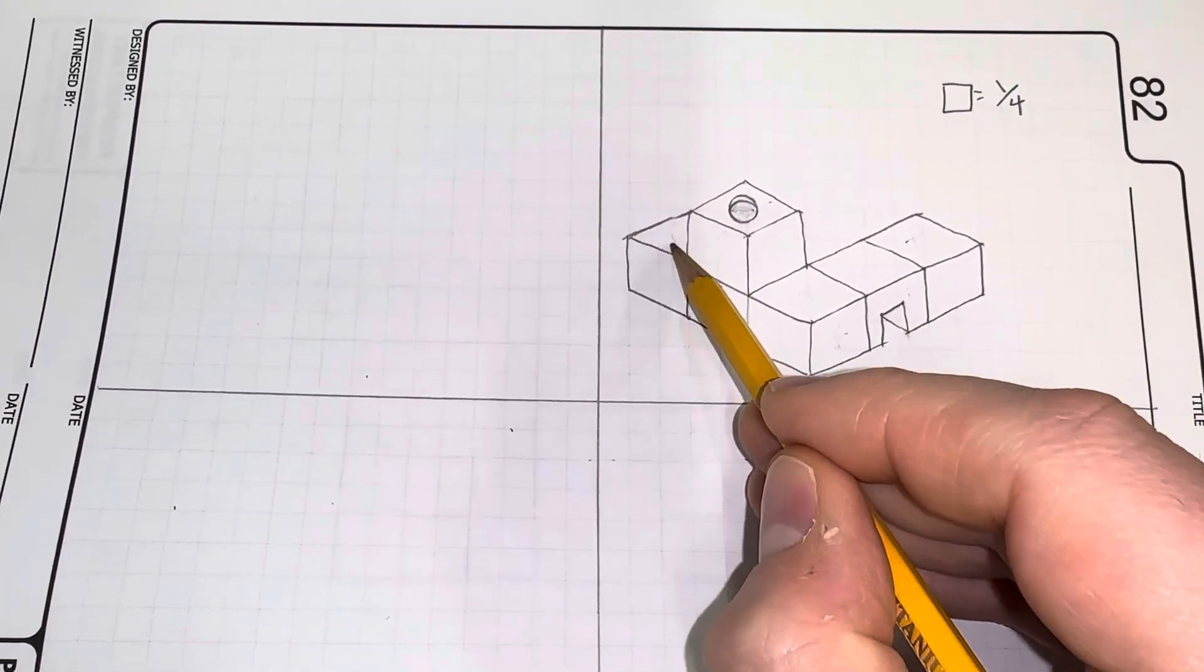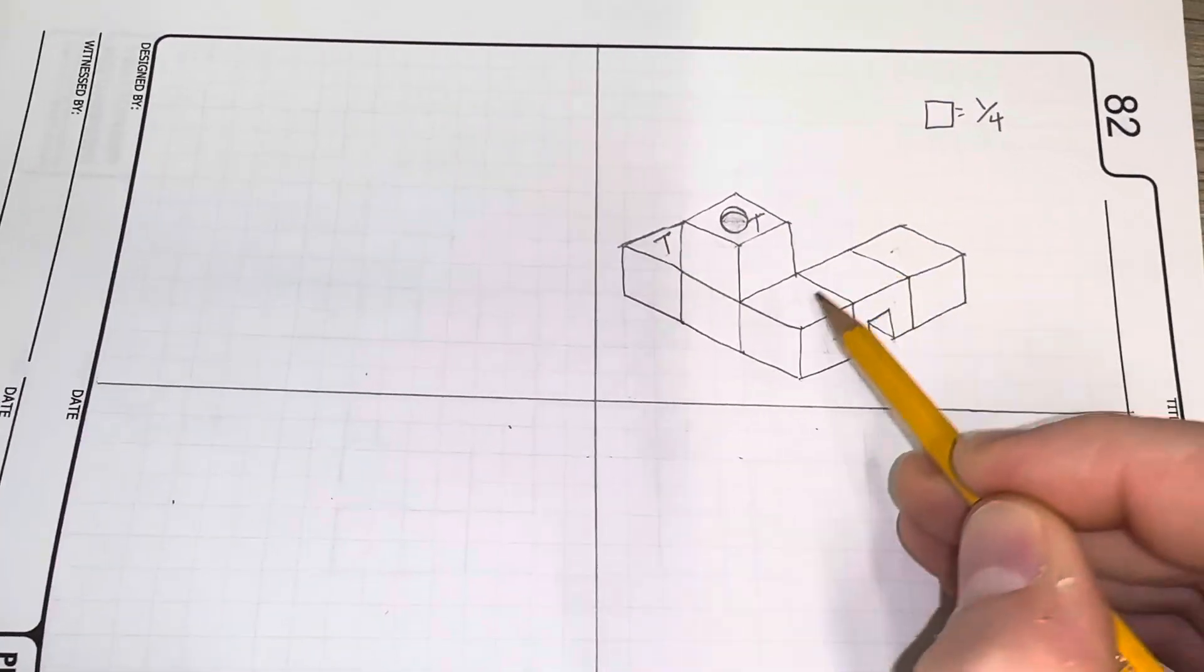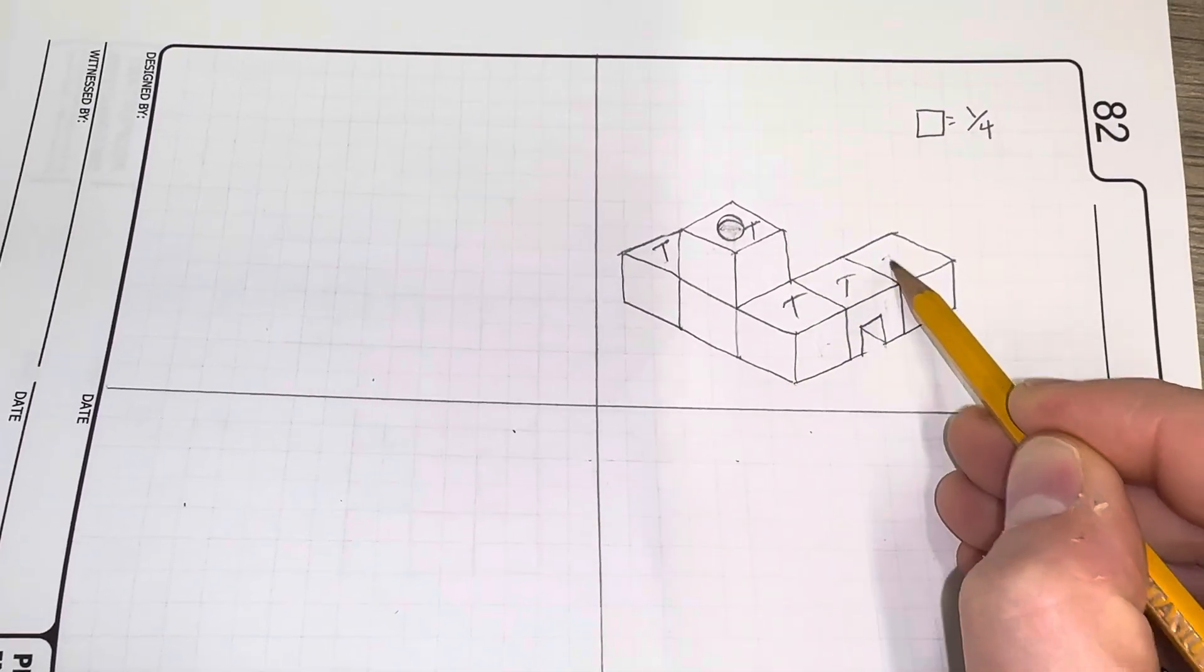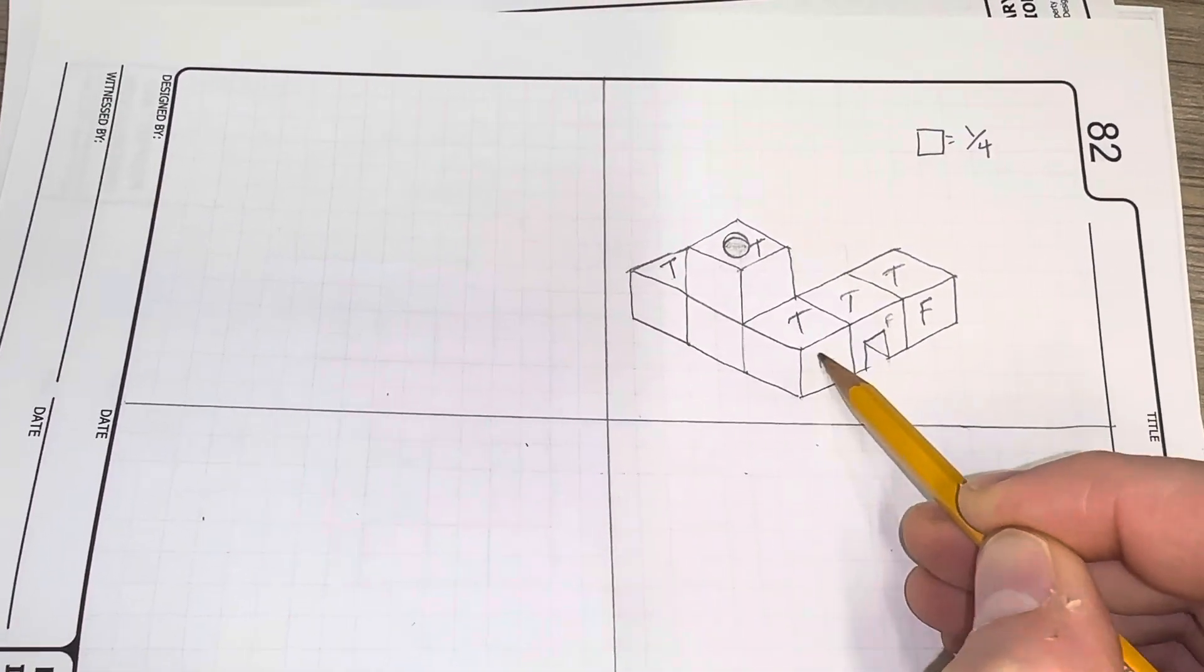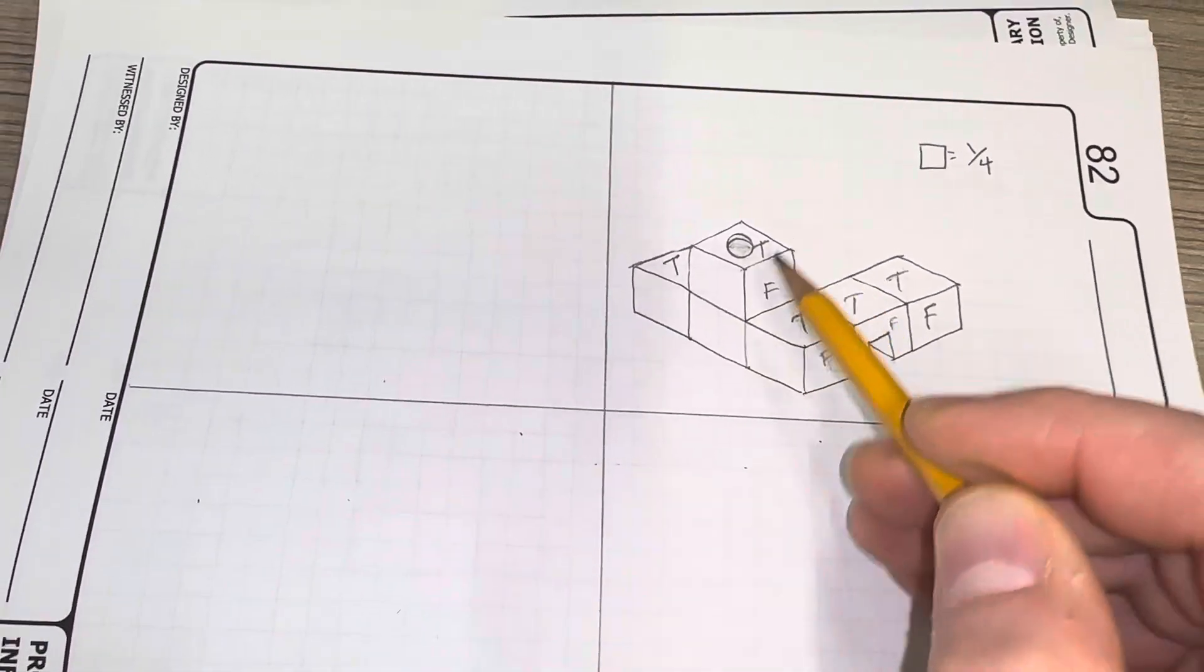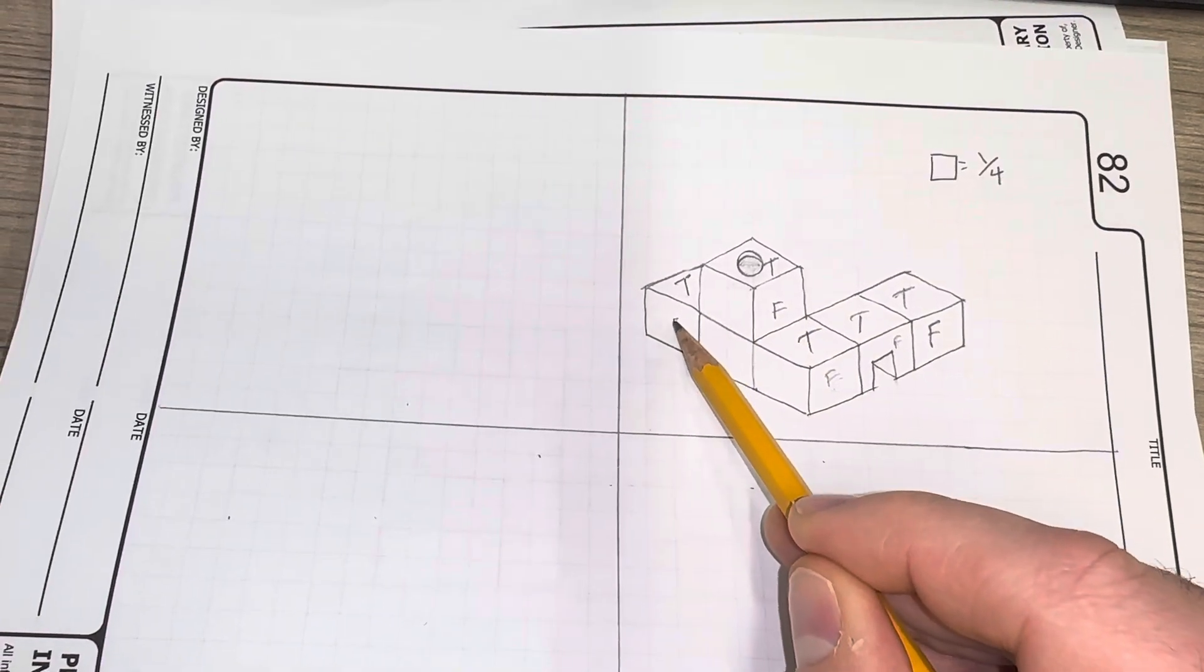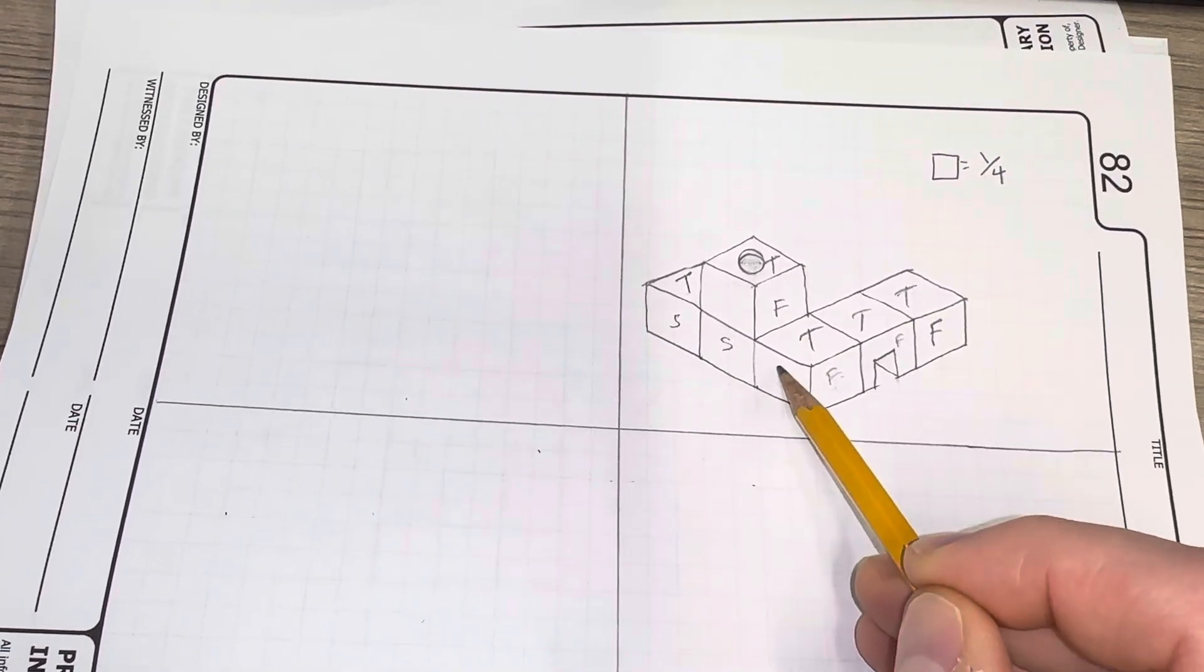Now we're just going to define our view, so where this is going to be what we see from the top, this again is what we're going to see from that front view, and this is what we're going to see from our side view as we rotate it.